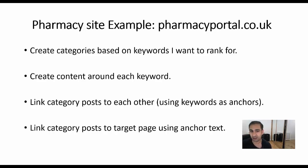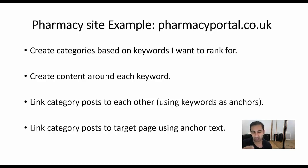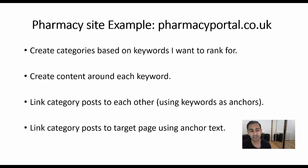I created a small example — pharmacybottle.co.uk. I'm from a pharmacy background and just done it as a small experiment on the side. It's not a full blown site but it gives you a good skeleton to look at. The way I would normally create a silo structure is: firstly, create categories based on the keywords I want to rank for; create content around each keyword; link the category posts to each other using keywords as anchors, making sure the placement is still textually relevant so don't force any links; and also link category posts to the target page using anchor text.